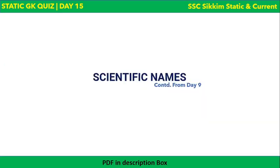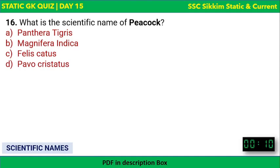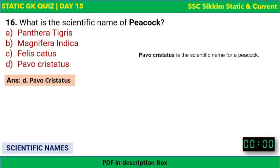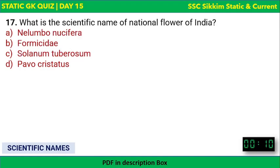Moving to scientific names, a continuation from day nine. What is the scientific name of the peacock, the national bird of India? The options are Panthera tigris, Mangifera indica, Felis catus, or Pavo cristatus. The answer is Pavo cristatus. Note: Panthera tigris is tiger, Mangifera indica is mango, and Felis catus is domestic cat.